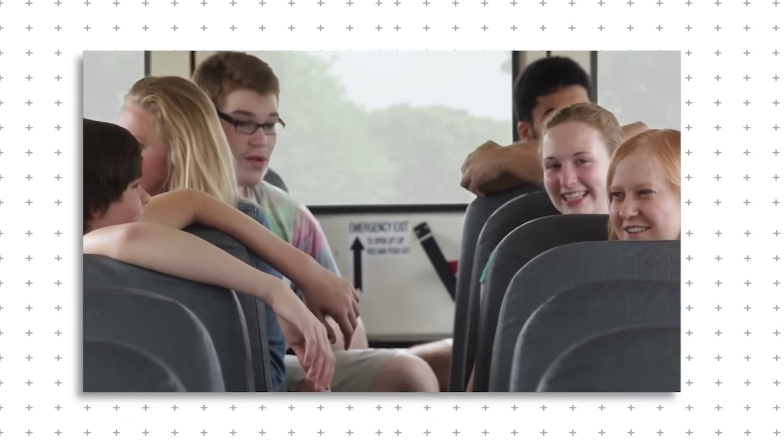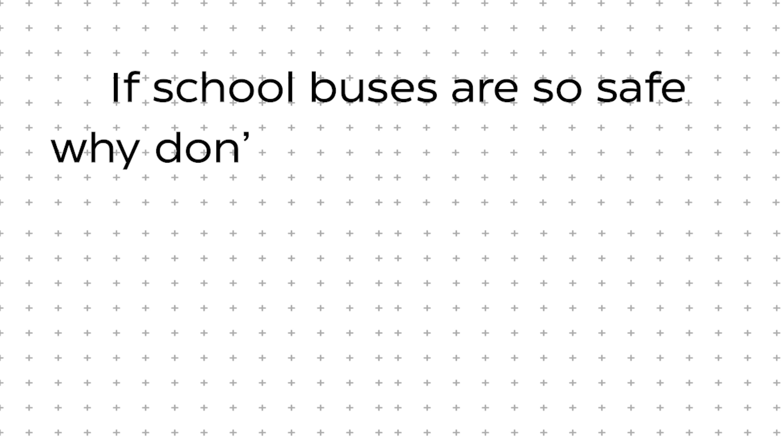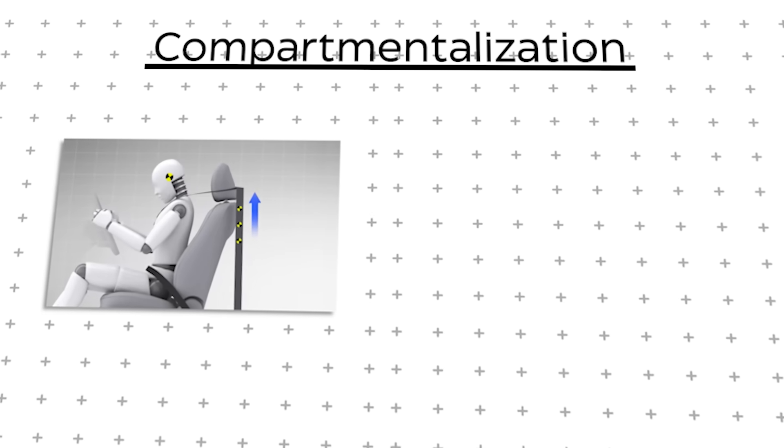But preventing rollovers was only half the equation. Engineers also needed to make sure passengers inside were protected in a crash. That brings up one of the most common questions about school bus safety. If school buses are so safe, why don't they have seatbelts? The answer is compartmentalization.